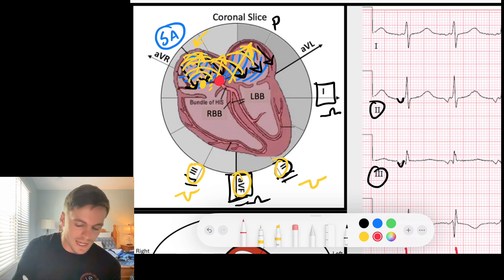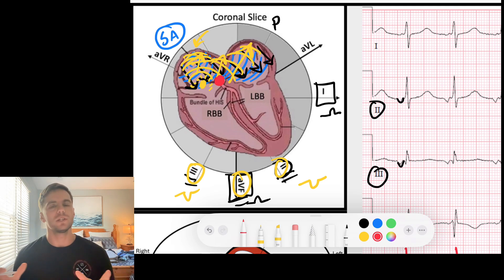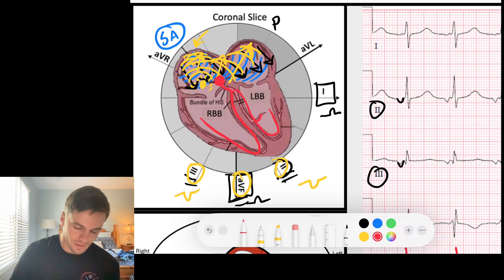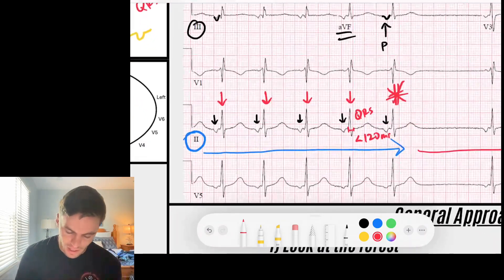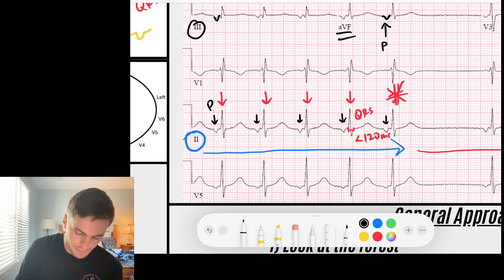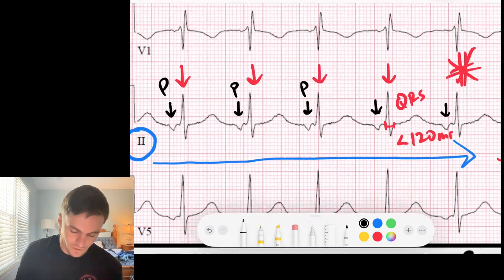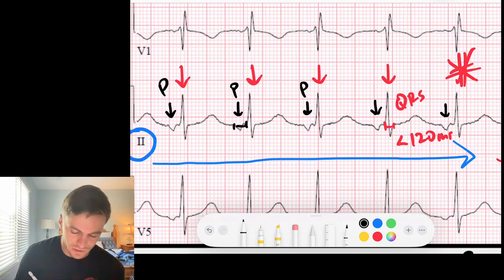But what also happens is that signal gets captured, just like any other atrial depolarization. It gets captured by the AV node, which delays the signal like it usually does for 120 to 200 milliseconds, right, our PR interval. And then it sends that signal down into the ventricles and we get ventricular depolarization, which creates the coupling to our QRS.